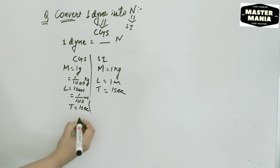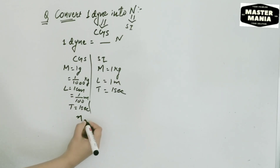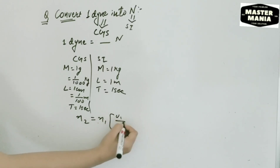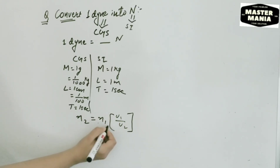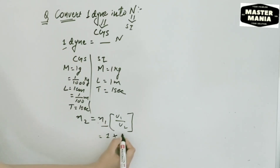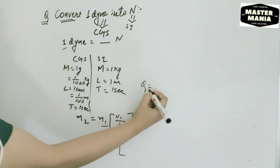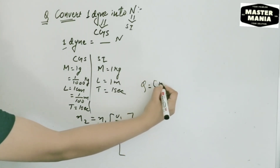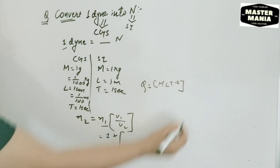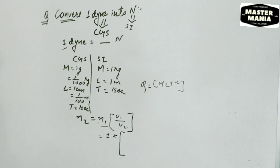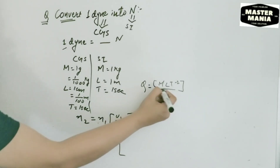Now let us write the formula. You can also watch my previous video to make it more clear and simple. N2 is equal to N1 multiplied by (U1 / U2), where N1 is one. The dimension of force — this whole part — is equal to Q, which is MLT to the power minus 2, since we need to find the dimension of force.